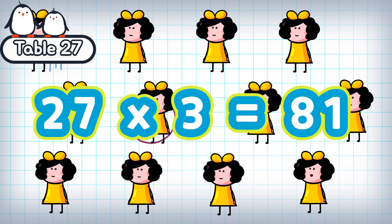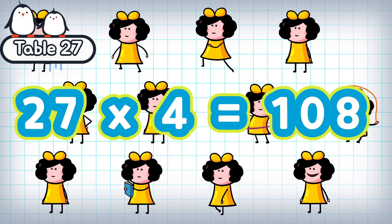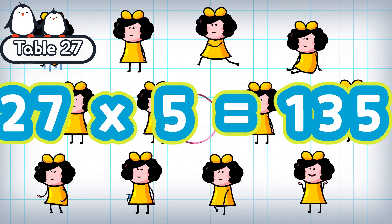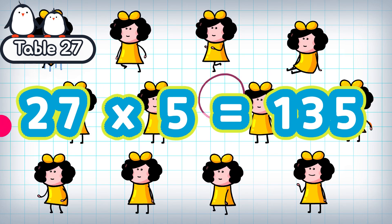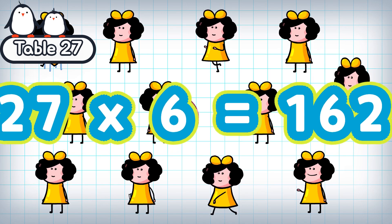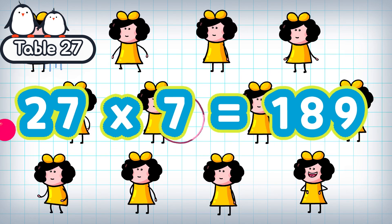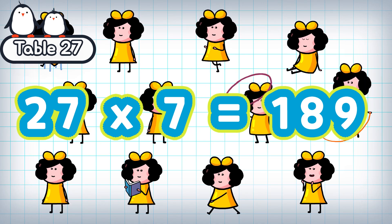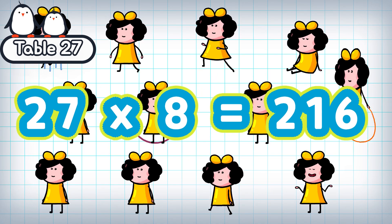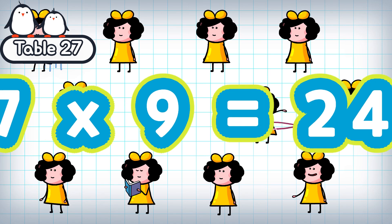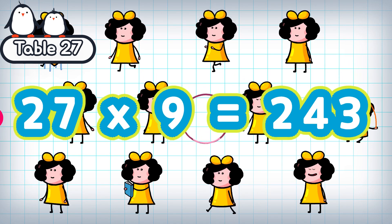27 times 3 is 81. 27 times 4 is 108. 27 times 5 is 135. 27 times 6 is 162. 27 times 9 is 243.